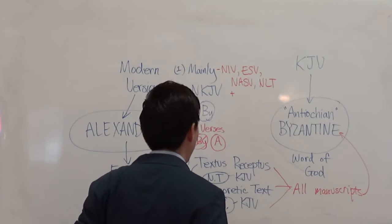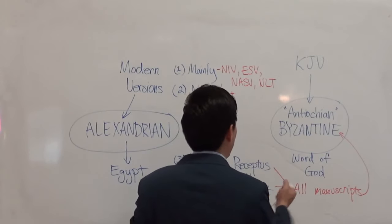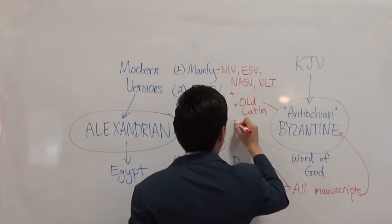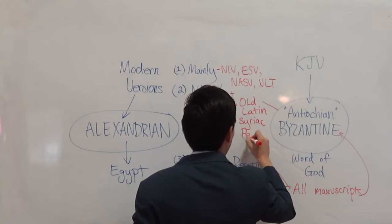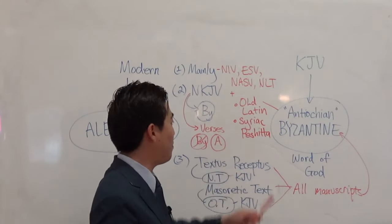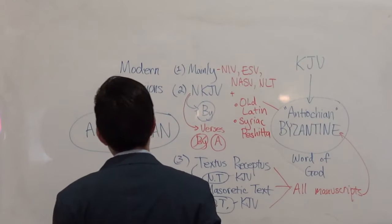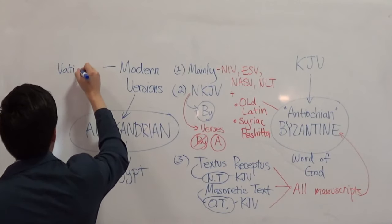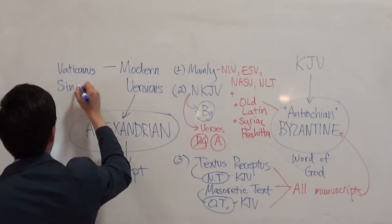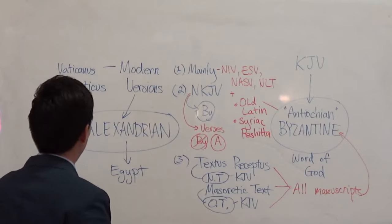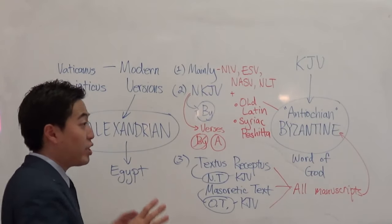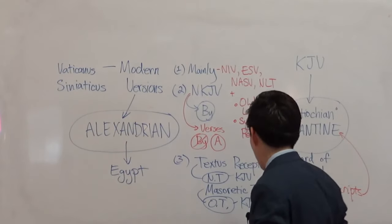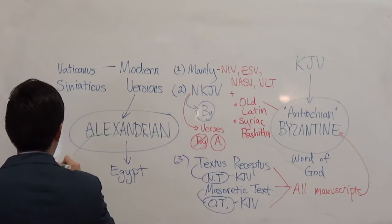There are two of the oldest manuscripts to note: the Old Latin and the Syriac Peshitta. These two manuscripts can be proven to be as early as the second century. Modern versions boast two famous manuscripts — Vaticanus and Sinaiticus — also second century. Scholars want to use Alexandrian text because their excuse is that it's older.